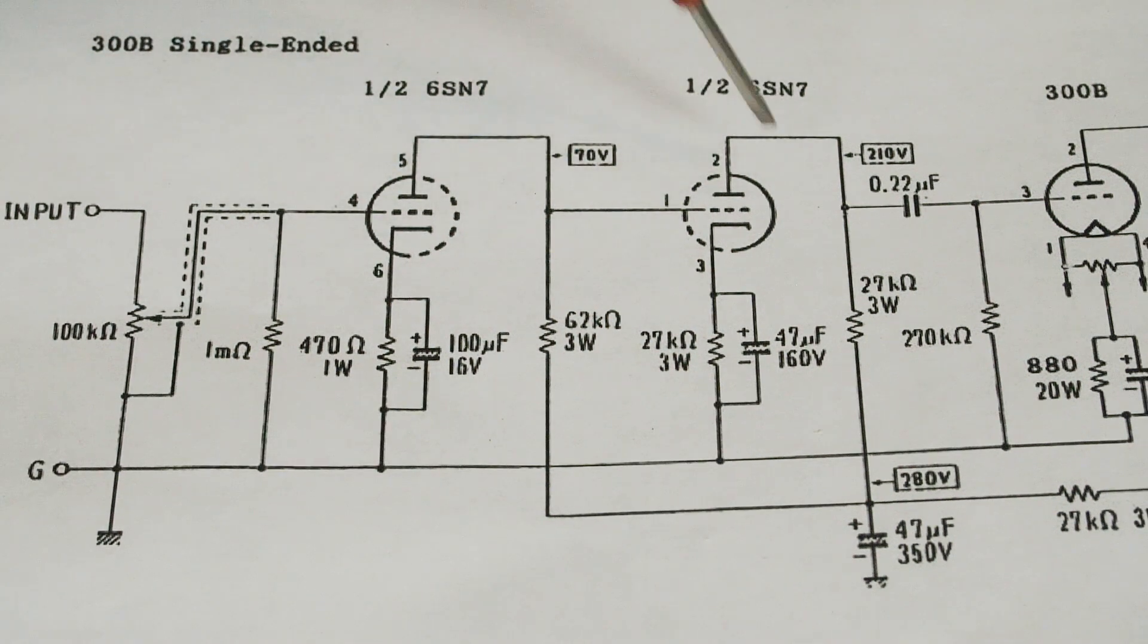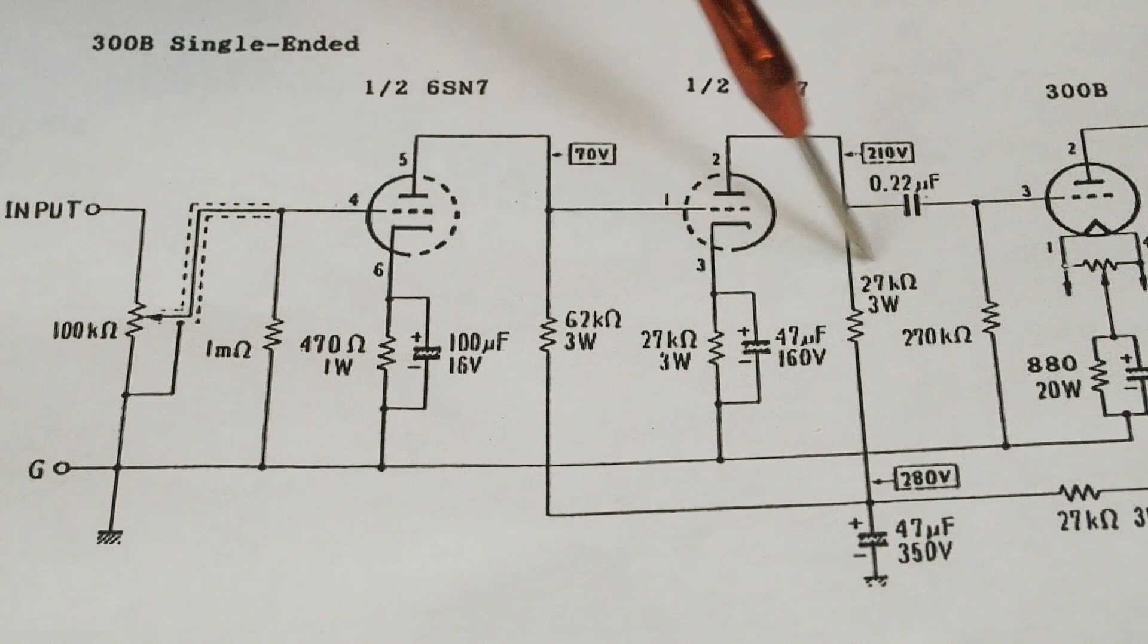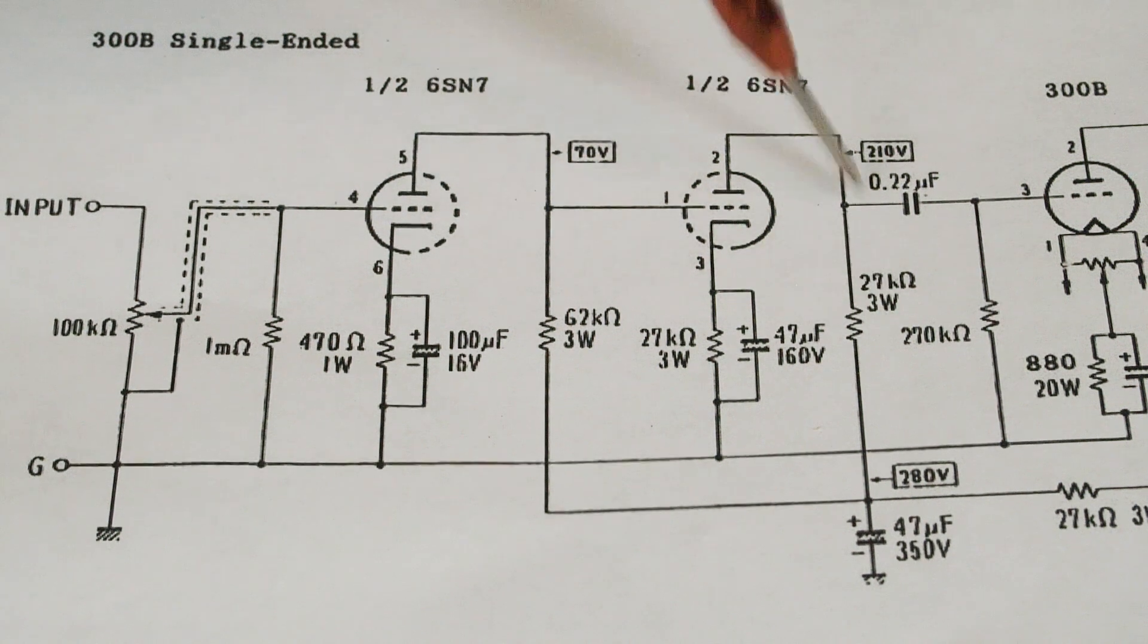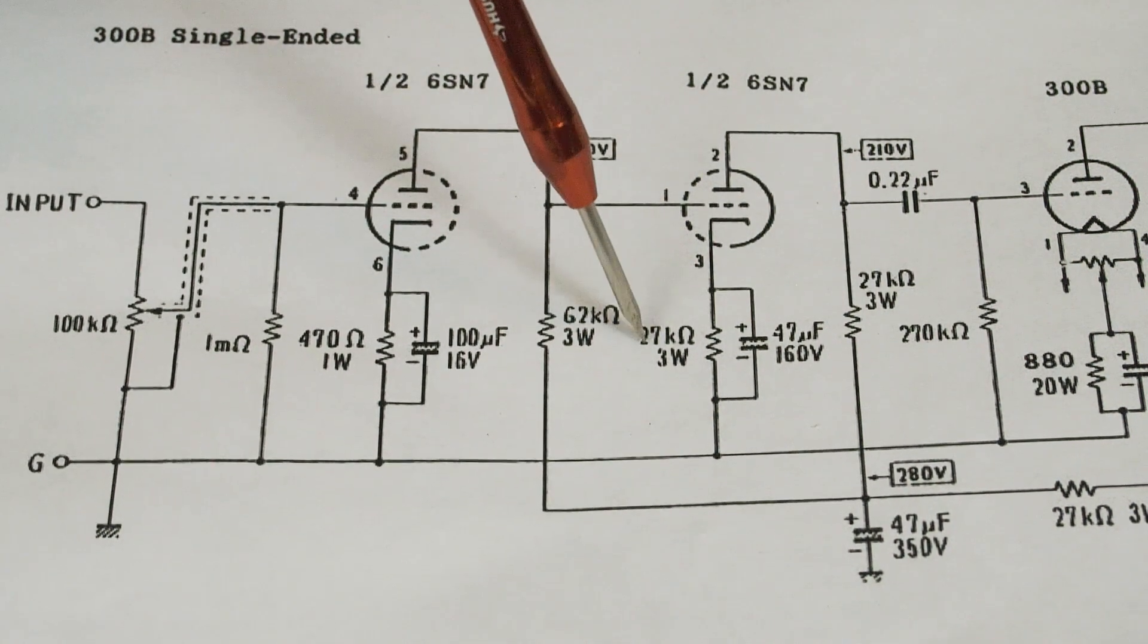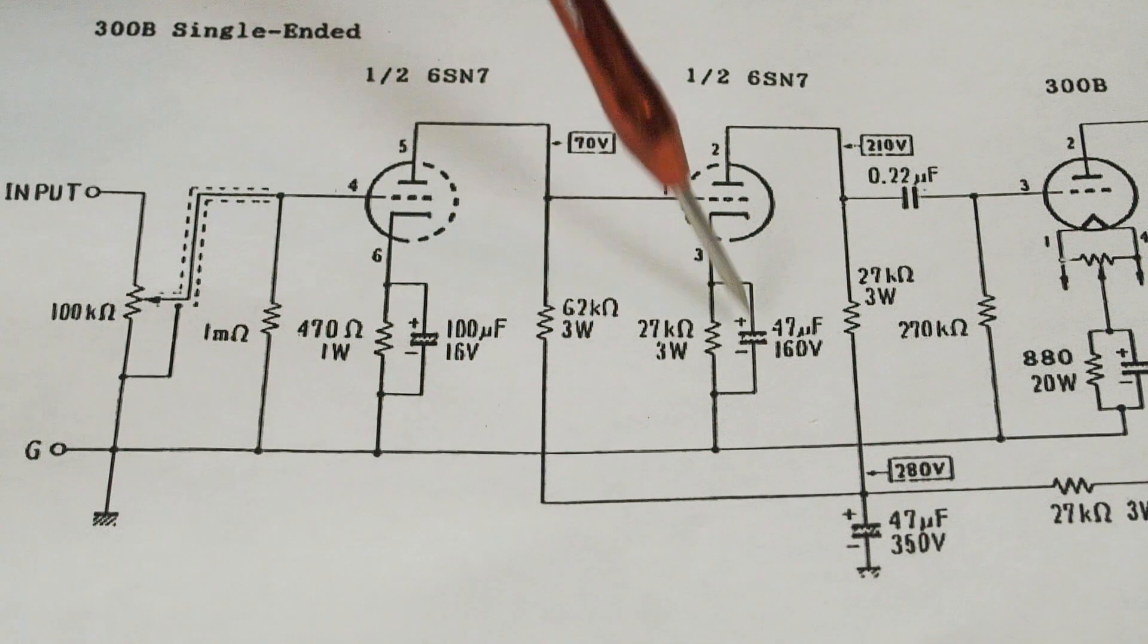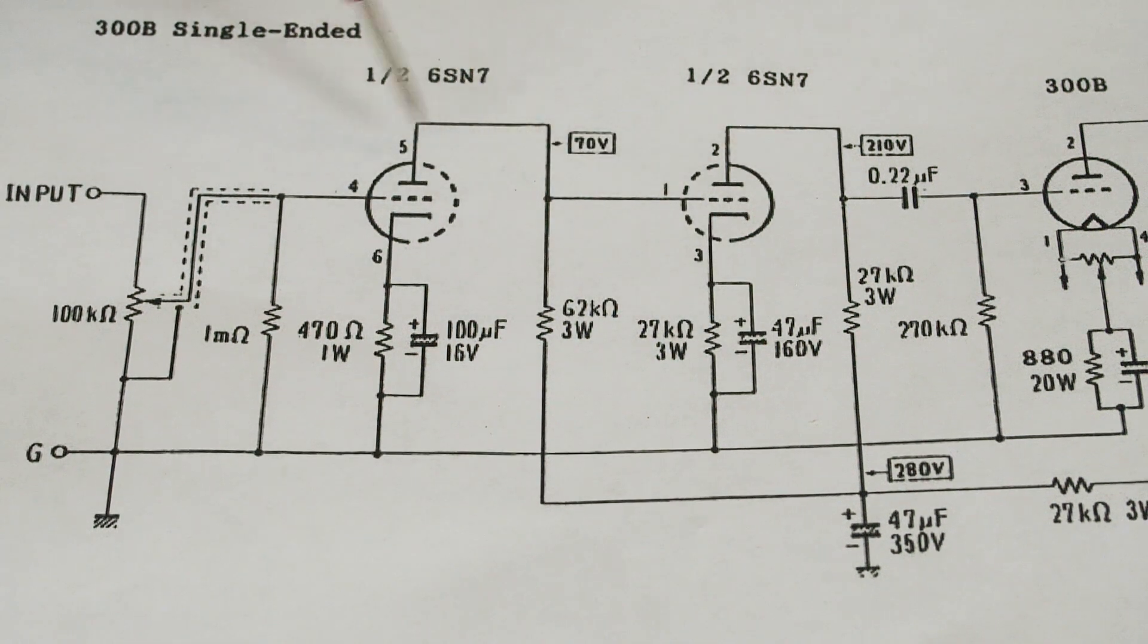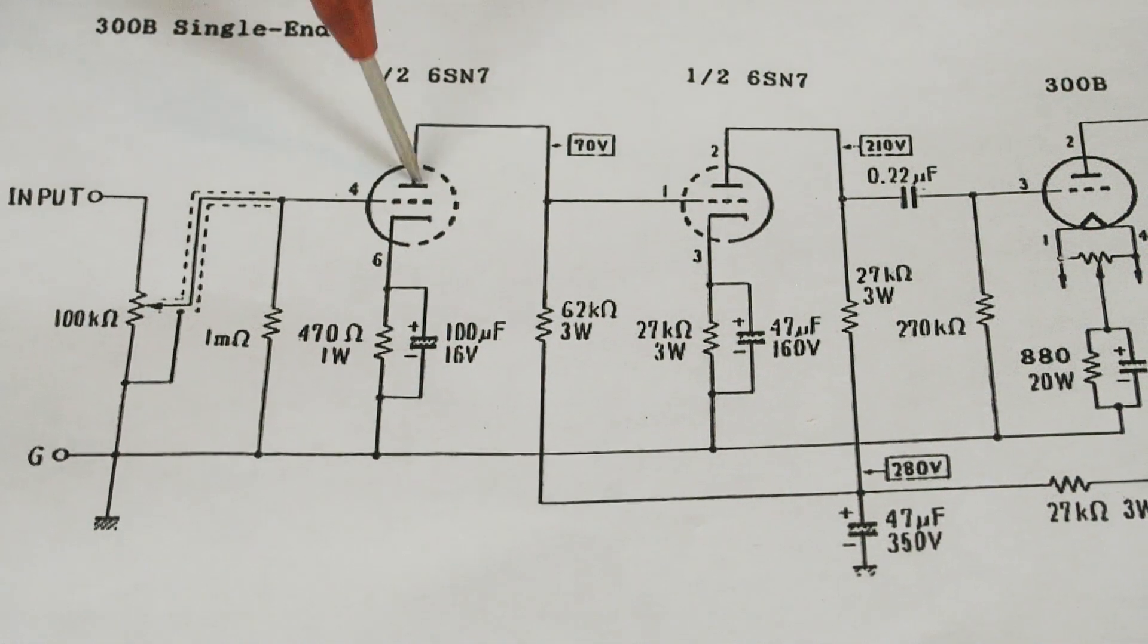And then this second, there's two triodes in the same envelope. That's why it's got these little dot dash lines here. This is the same tube. It's one half of a tube and one half of a tube. There's two triodes in here. So then the B plus comes up here. The plate load resistor for this second stage is a 27k. Goes to the plate. Cathode is 27k, three watt with a 47 uF 160 volt across it.